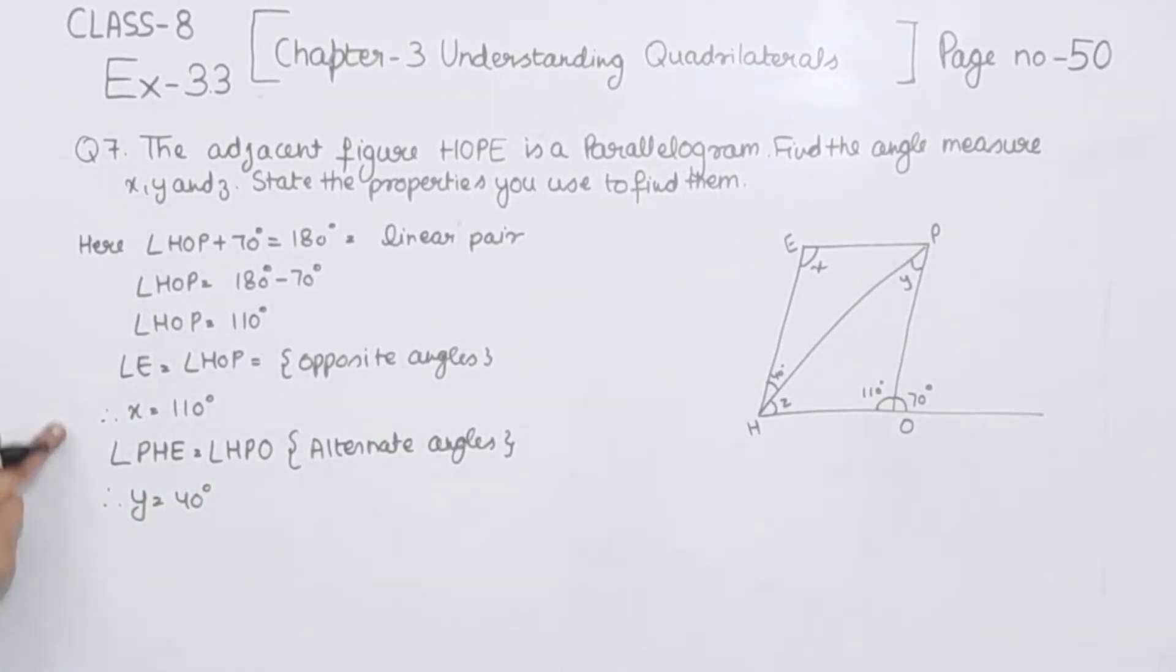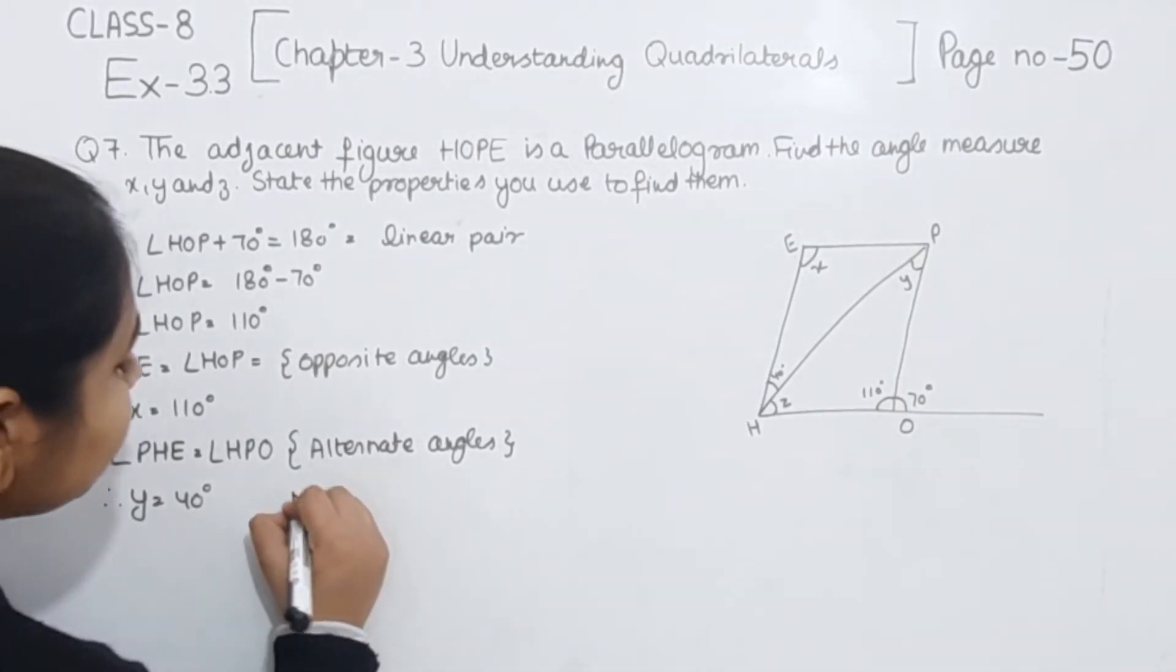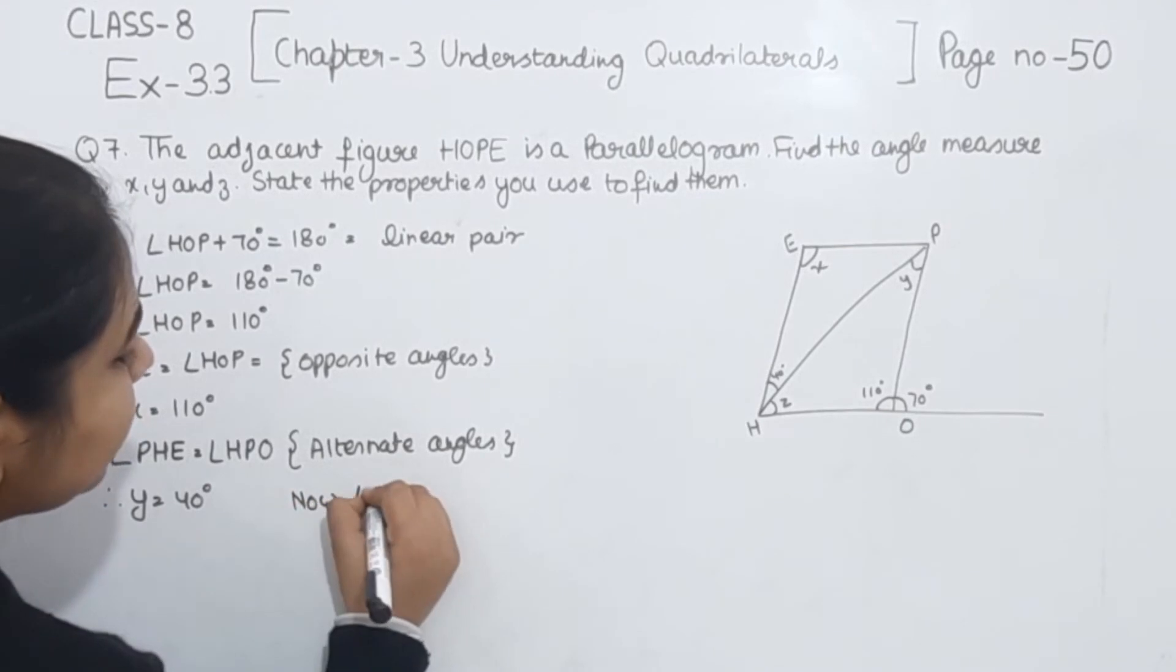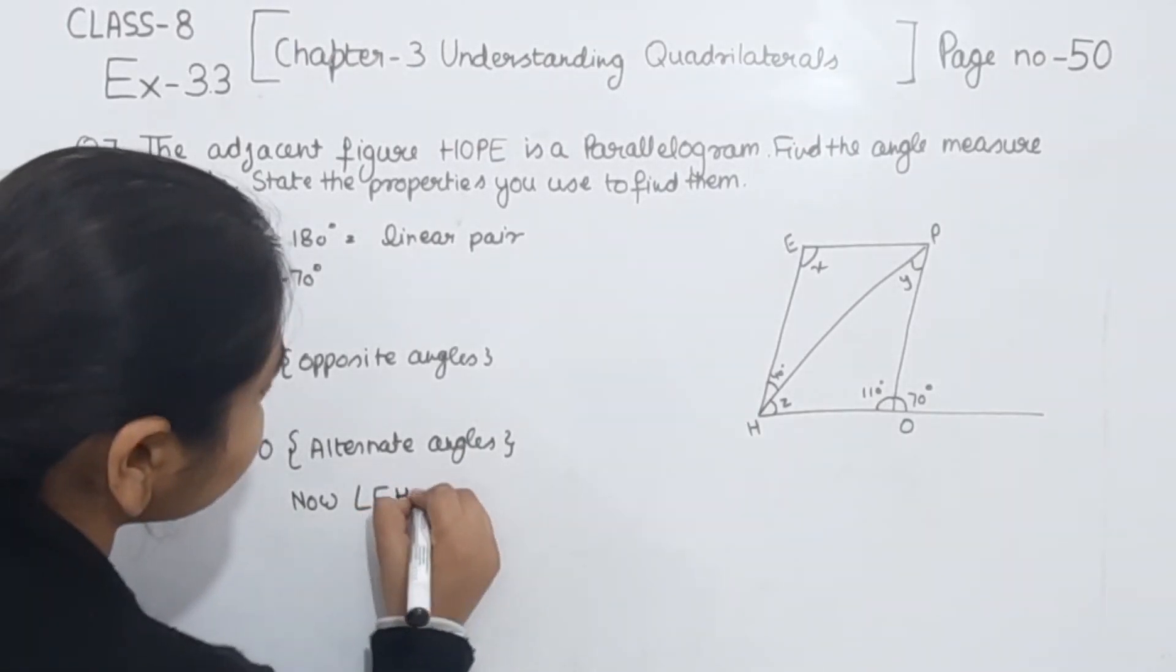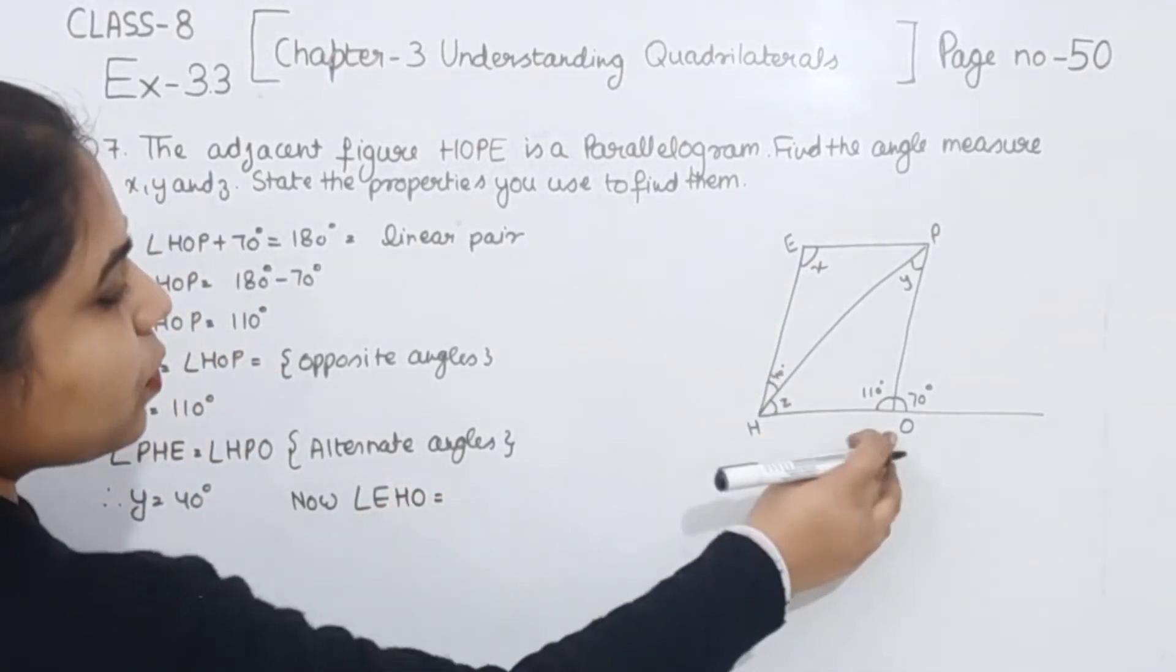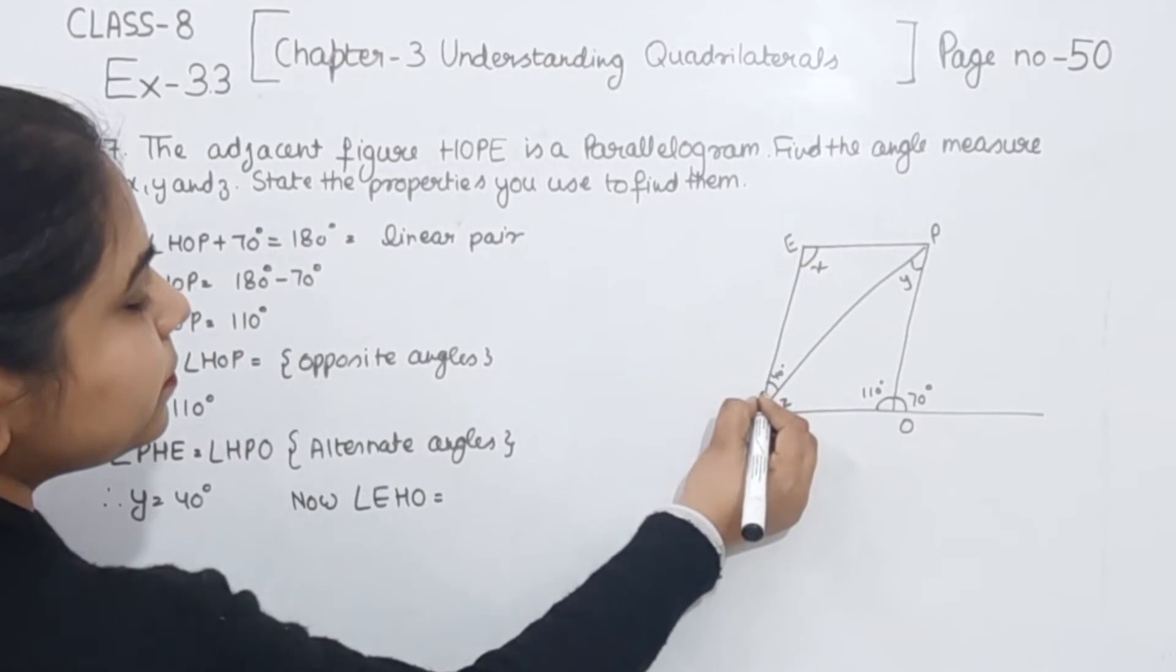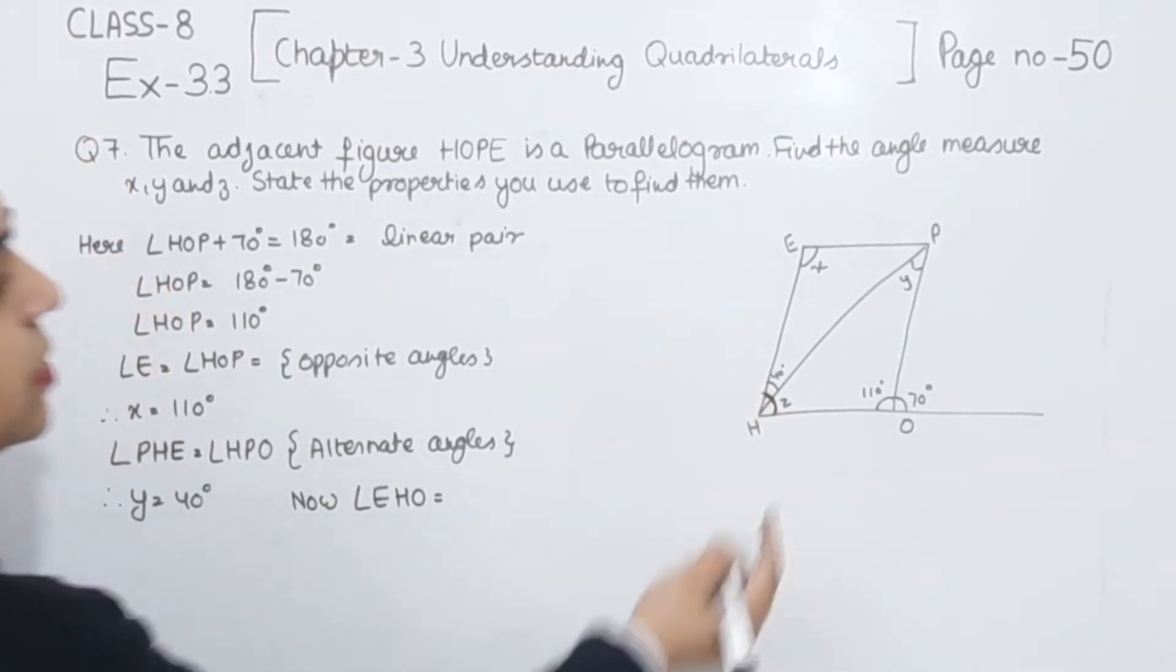So we are having the value of X and Y. Now we have to find the value of Z. So I am going to write here, now angle EHO. This whole one.